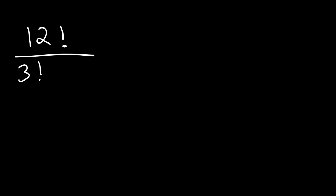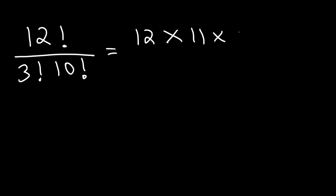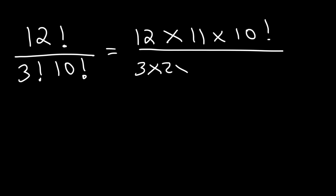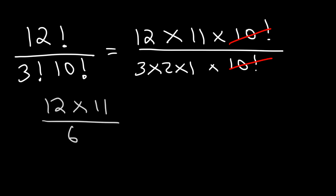Try this one: 12 factorial divided by 3 factorial times 10 factorial. Now 12 factorial is going to be 12 times 11 and then times 10 factorial. 3 factorial is going to be 3 times 2 times 1. Let's cancel 10 factorial. Now 3 times 2 is 6, and 12 divided by 6 is 2. So we got 2 times 11, and so the final answer is just 22.